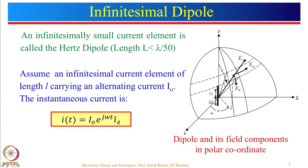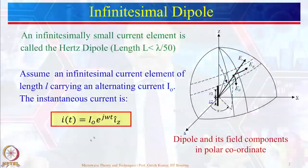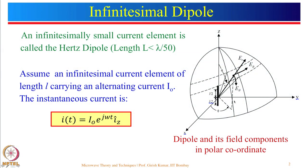For now, think of it as a uniform current carrying conductor, and after the derivation we will discuss practical cases. If we have a current carrying conductor, there will be a magnetic field and several electric field components. Let us define the polar components: angle phi is measured from the x-axis, angle theta is measured from the z-axis, and r is the direction where we want to find the electric field.